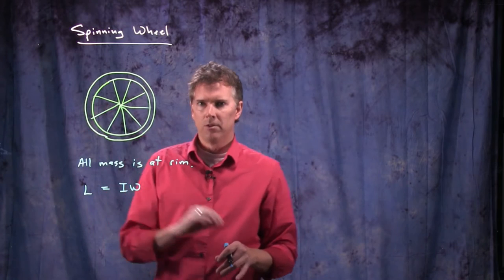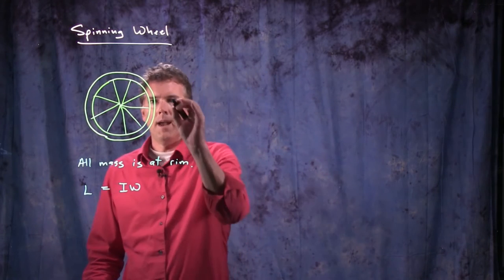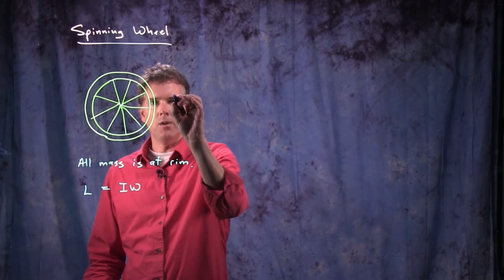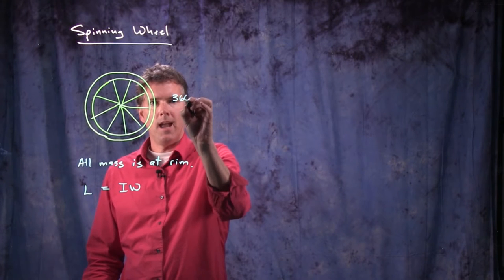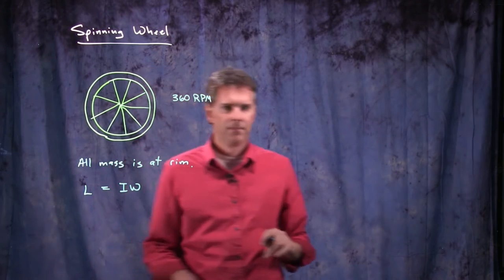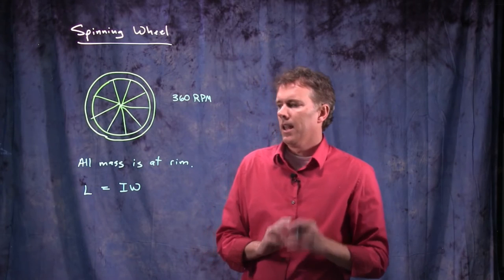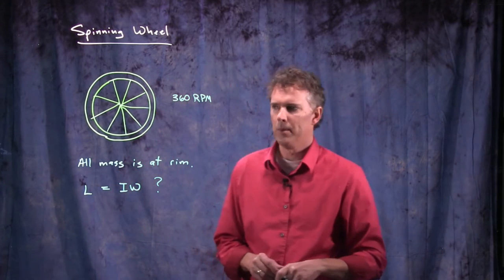So let's take a regular bicycle wheel, and let's say you're racing down the road, and omega is not given, but what is given is that you are going at 360 RPM. This is how fast that wheel is rotating. And let's see if we can calculate this, L equals I omega.